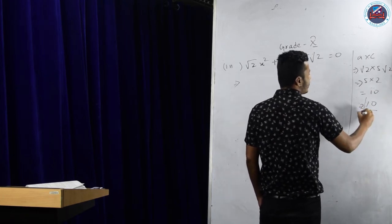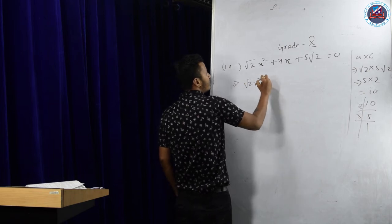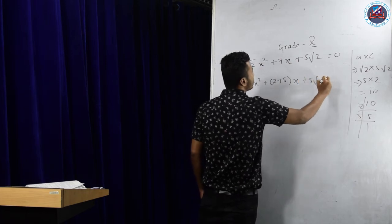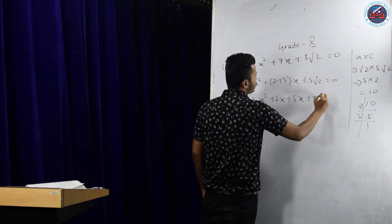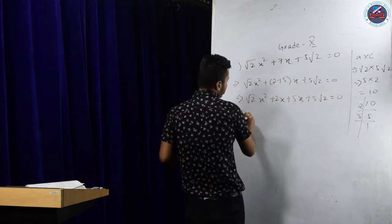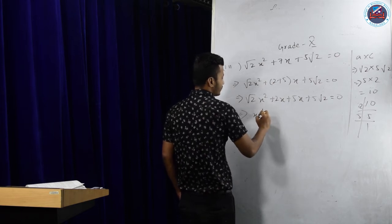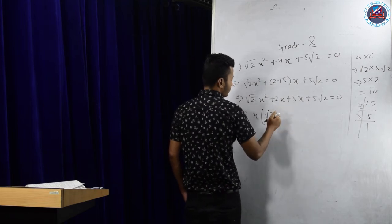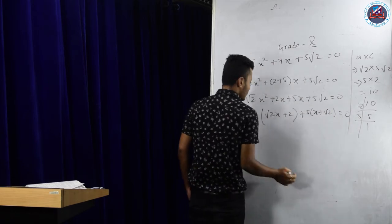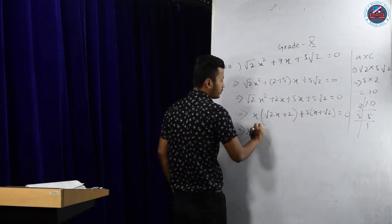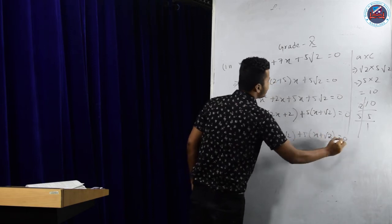Next step: prime factorize 10 to get 2 and 5. To get 7 from 2 and 5, I add them: 2 plus 5 equals 7. So I rewrite the equation as: root 2 · x² plus 2x plus 5x plus 5 root 2 equals zero. Now take x common from the first two terms: x(root 2 · x plus root 2), then take root 2 common from the last two terms: plus root 2 (x plus root 2)... wait, let me regroup. Taking x common: x(root 2 · x plus 5) is not matching — let me take x common from root 2 · x² + 2x to get x(root 2 · x + 2), and from 5x + 5 root 2 take 5 common to get 5(x + root 2). Ensure the bracket terms are equal — if they are not equal you have made an error somewhere.